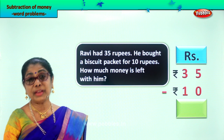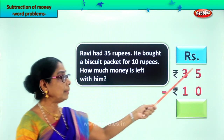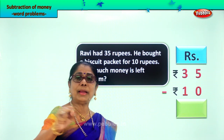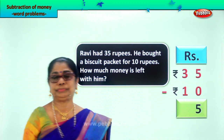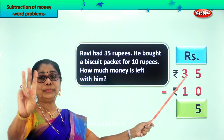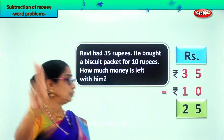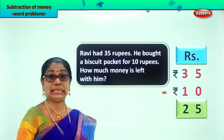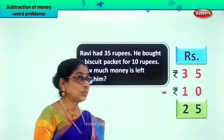Let's work out the sum and find out how much money is left with Ravi. The sum is placed correctly. In the one's place we have 5 minus 0. What is 5 minus 0? 5 itself. In the ten's place, 3 minus 1. 3 take away 1 is 2. So the answer is 25 rupees.